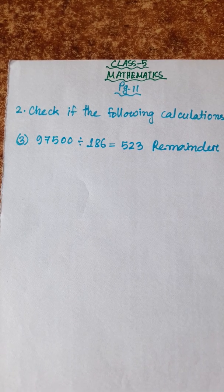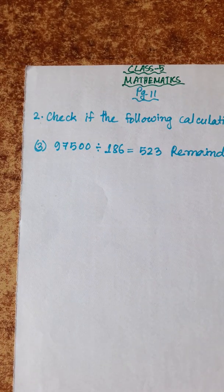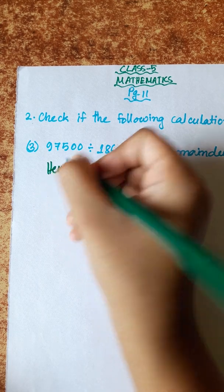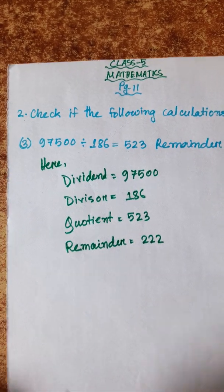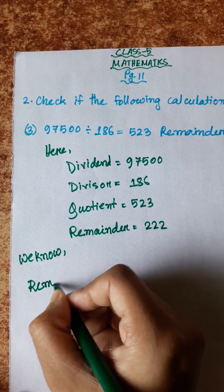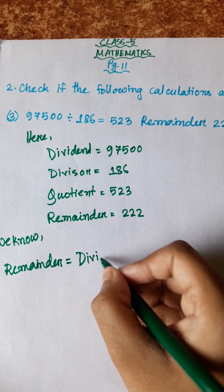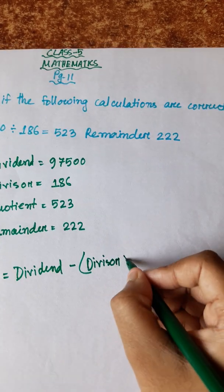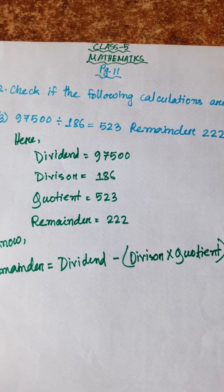Now let's justify the last problem: 97500 divided by 186 is equal to 523 remainder 222. Writing all the information: dividend is 97500, divisor is 186, quotient is 523, remainder is 222. Using the remainder formula: remainder equals dividend minus divisor into quotient.